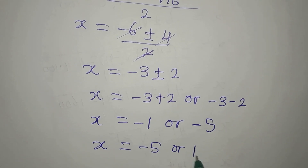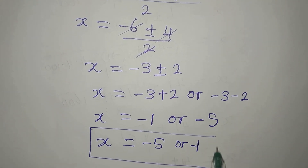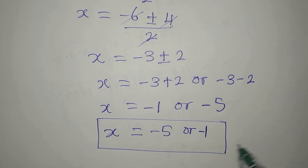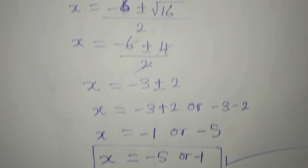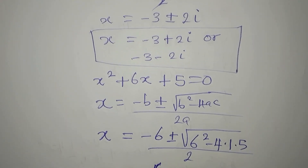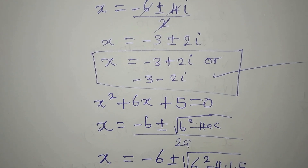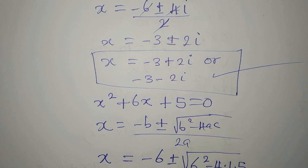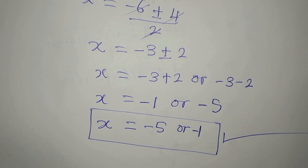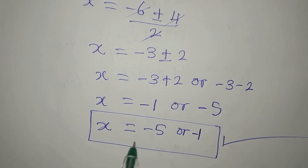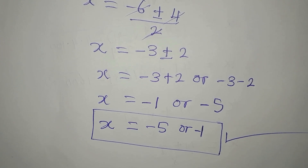So from this factor we have two more solutions: x equals minus 1 or x equals minus 5. These are the real solutions to the problem. The first two solutions we got — minus 3 plus 2i and minus 3 minus 2i — are imaginary solutions because of the i. So if you're looking for only the real solutions, x equals minus 1 or x equals minus 5. Thank you for watching to the end, and if you have not subscribed, please subscribe.